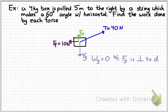So the work done by gravity is going to be zero, because gravity is perpendicular to the direction it's going. It's going to the right, gravity is going down, those directions are perpendicular. Same thing for the normal force would do no work.